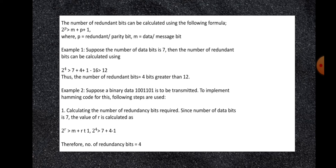Example 2: Suppose binary data 1001101 is to be transmitted. To implement Hamming code, calculate the number of redundancy bits required. Since the number of data bits is 7, using 2^R > M + R + 1, we get 2^4 > 7 + 4 + 1. Therefore, the number of redundancy bits is equal to 4.